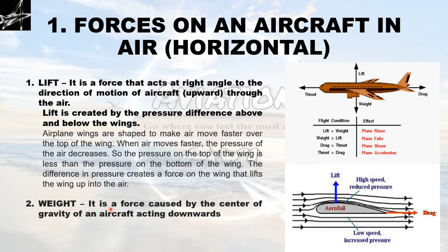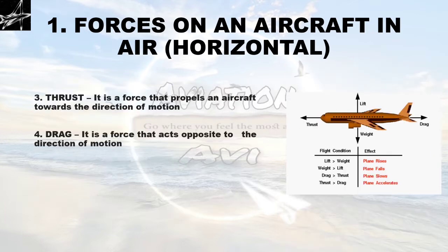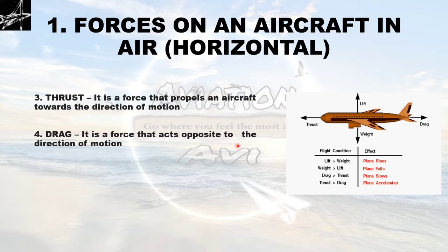Weight is a force caused by the center of gravity of an aircraft acting downward — the whole mass of the aircraft acting from the center of gravity downward. Thrust is a force that propels an aircraft in the direction of motion, generated by the engines. Drag is a force that acts opposite to the direction of motion — essentially a resistance to thrust.